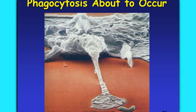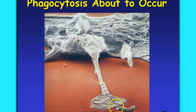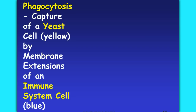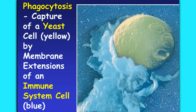Here's an example of phagocytosis about to occur. This is a white blood cell on the surface of a red blood cell. There are some bacteria down here, and the white blood cell is extending out a pseudopod and is about to engulf and take it in. This picture shows a yeast cell in yellow and the membrane extensions of the immune cell — the white blood cell — that's about to engulf it.